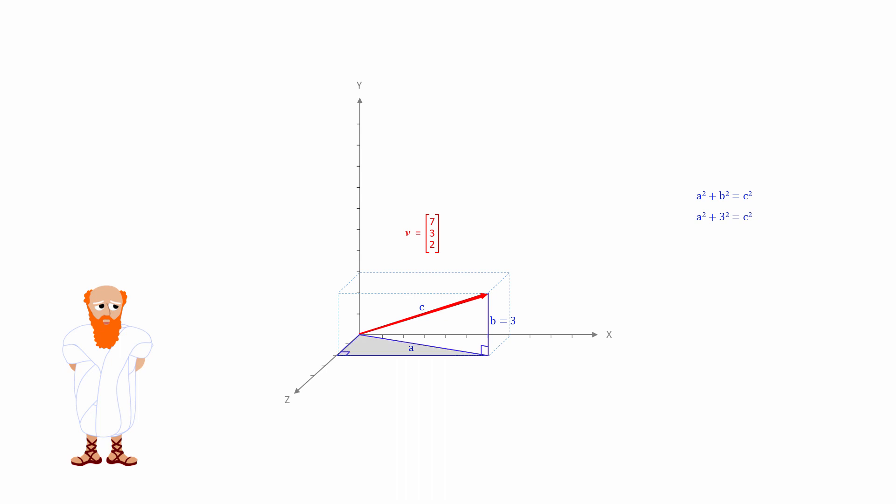To get the length of the side labeled A, notice that we have another right-angled triangle laid flat on the floor and A is its hypotenuse. The known sides of this triangle are the Z and X components of the vector, namely 2 and 7.